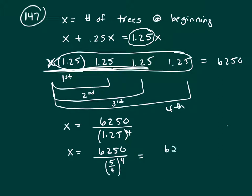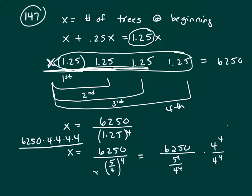I want to switch this to 6,250 divided by 1.25 is 5 fourths to the fourth. And I wouldn't show this many steps on the GMAT, but I'm going to for illustration purposes here. This is 5 to the fourth over 4 to the fourth. And let's multiply top and bottom by 4 to the fourth. So that will give me 6,250 times 4 to the fourth divided by 5 to the fourth, because they cancel.